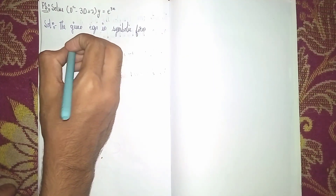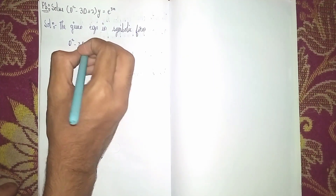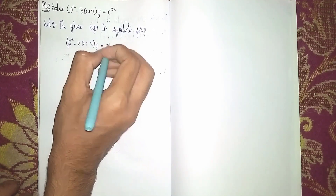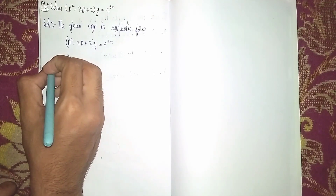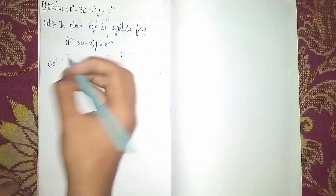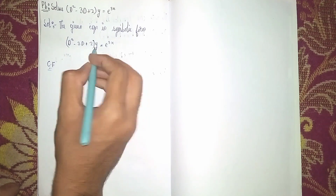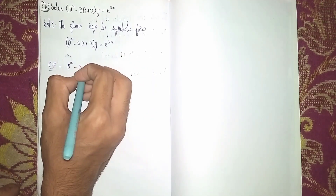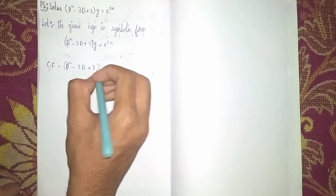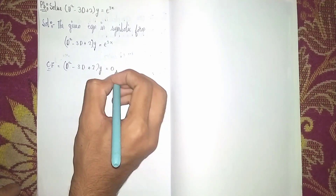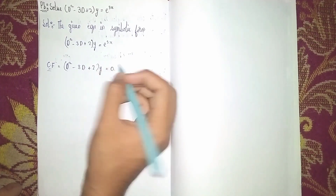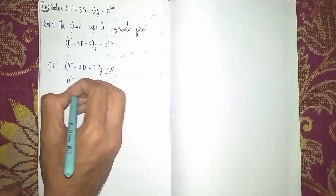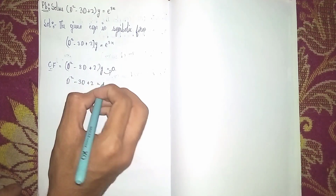The equation in symbolic form is: (D² - 3D + 2)y = e^(3x). Now we have to find the complementary function. To find the complementary function, we take the right-hand side as 0, so D² - 3D + 2 = 0.